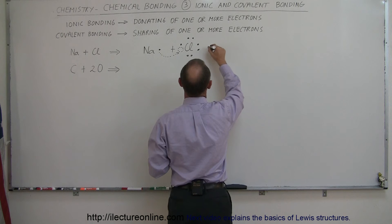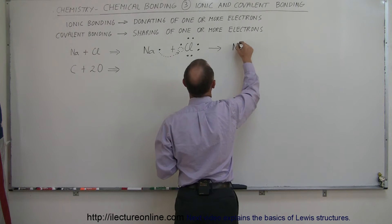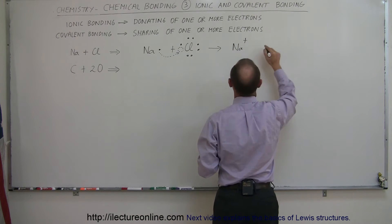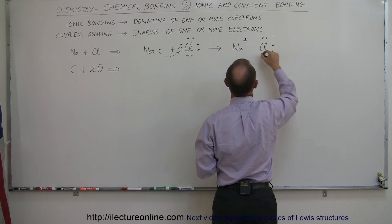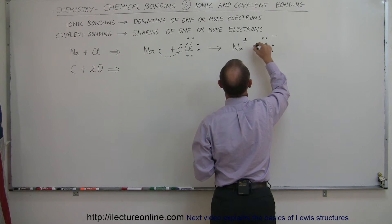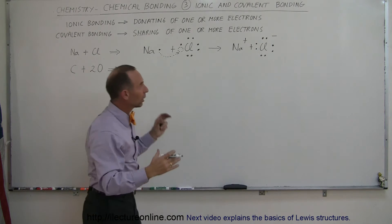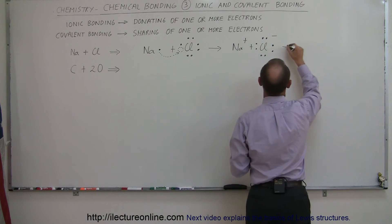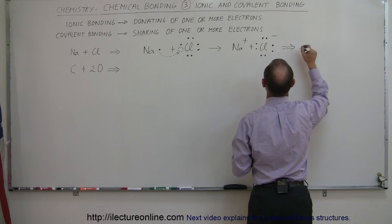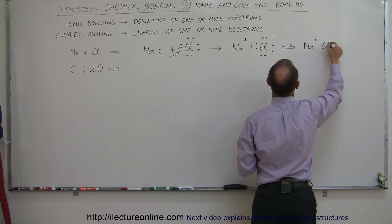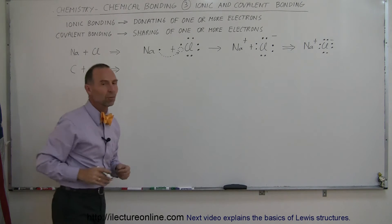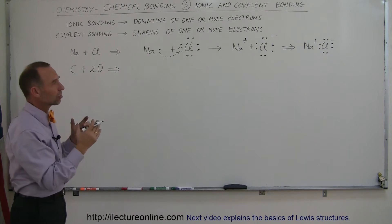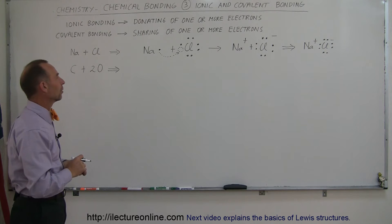Chlorine becomes a negatively charged ion. So sodium ends up with a positive charge, and chlorine now has eight valence electrons, but at the price of being a negatively charged ion. Since they are now oppositely charged, they will attract each other and form a single ionic bond. What that looks like is sodium positively charged and chlorine negatively charged, showing all its electrons. That's how we show it as an ionic compound, and that's the symbolism we use. Later on, when we use Lewis structure symbolism, it looks a little bit different.